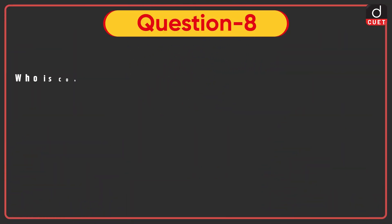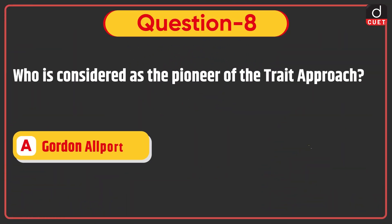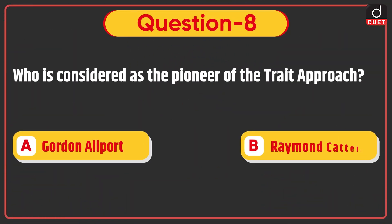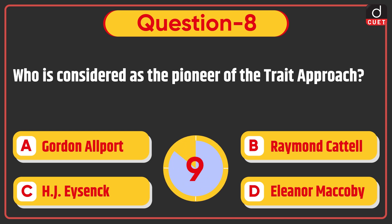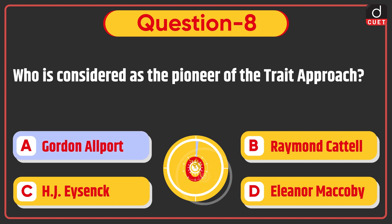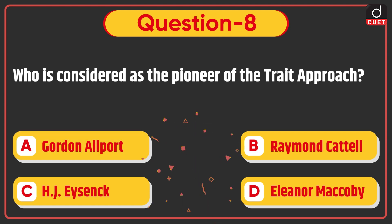Next question: who is considered as the pioneer of the trait approach — Gordon Allport, Raymond Cattell, H.J. Eysenck, or Eliano or McCrae? The correct answer is option A: Gordon Allport.